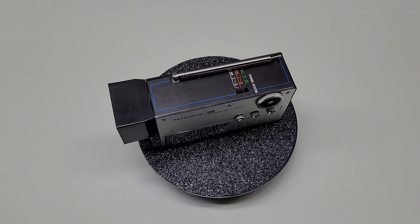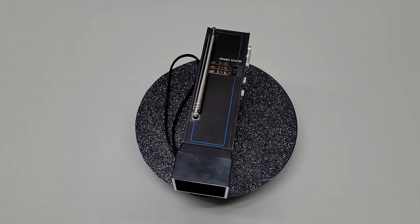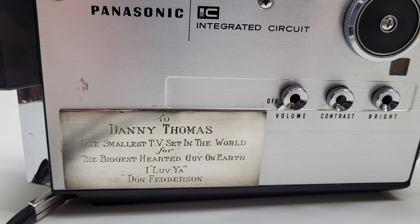You might have already noticed it. On one side there is this engraved brass plaque that says the following: 'To Danny Thomas, the smallest TV set in the world for the biggest hearted guy on earth. I love you.'